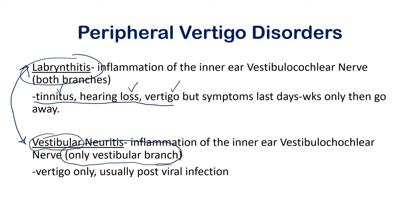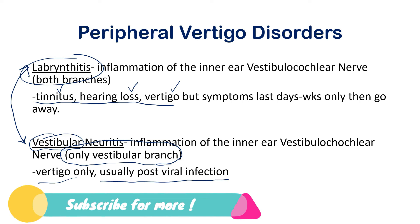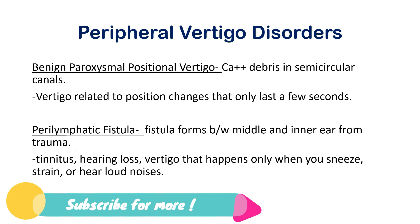Vestibular neuritis only affects the vestibular branch — easy to remember because the name starts with 'vestibular.' The result is vertigo only, with no tinnitus or hearing loss. This is usually post-viral infection. Many exam questions will describe a patient who had a viral infection a few weeks back and now presents with vertigo as their only symptom — that should make you think of vestibular neuritis.